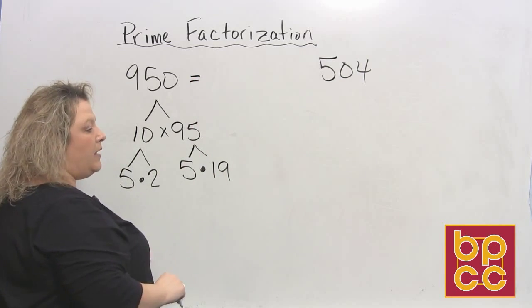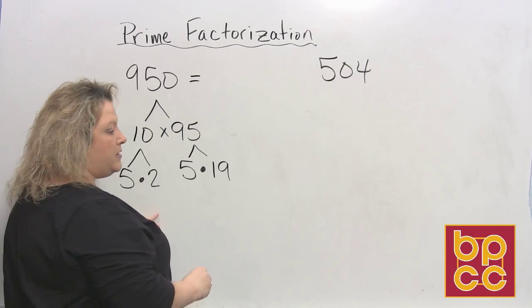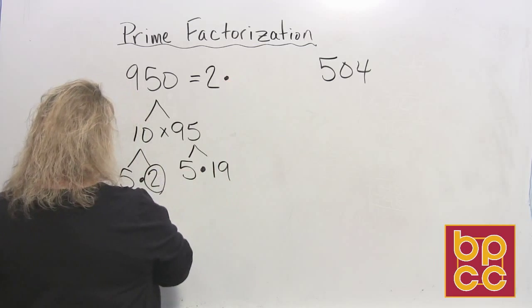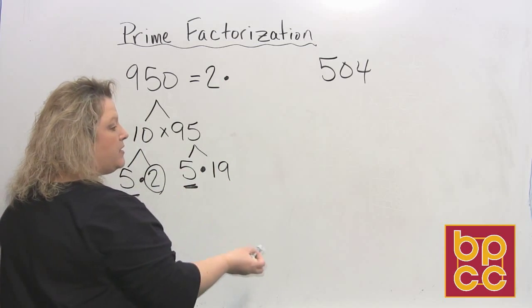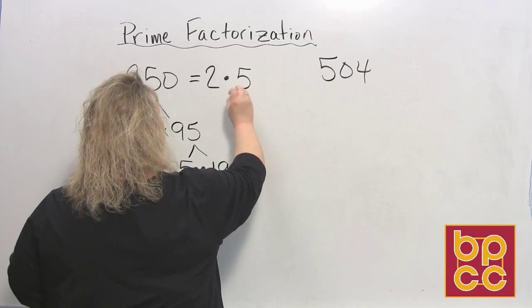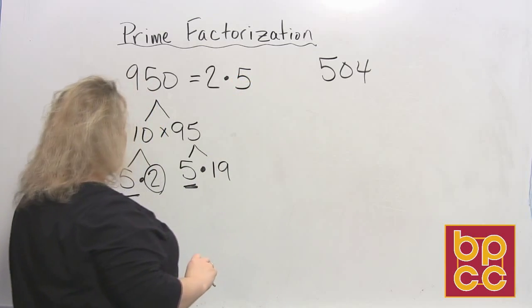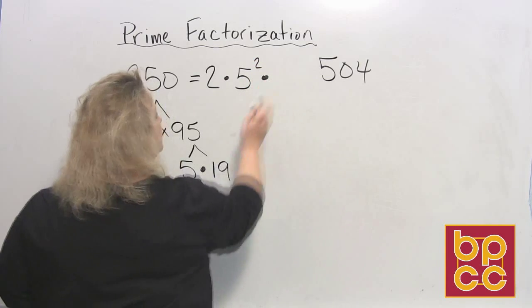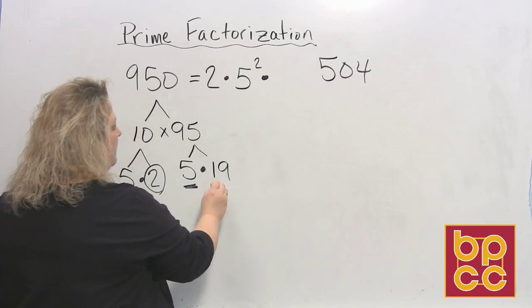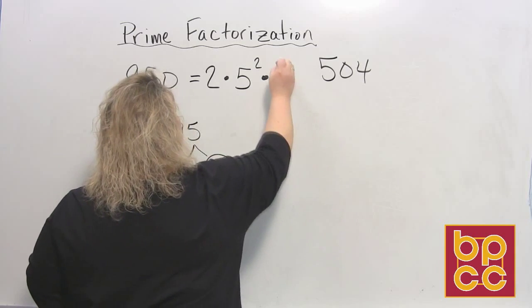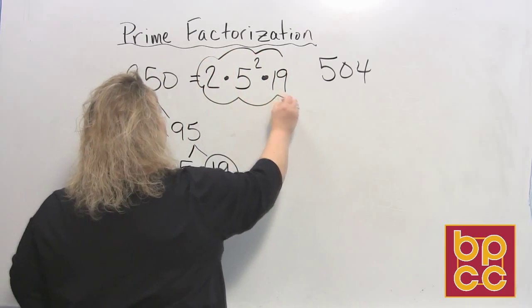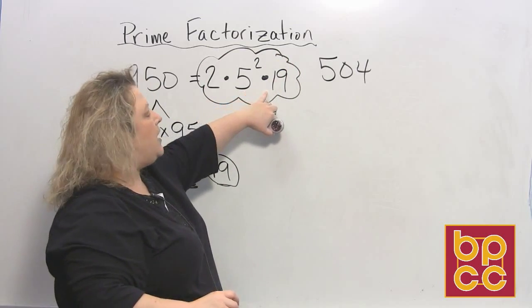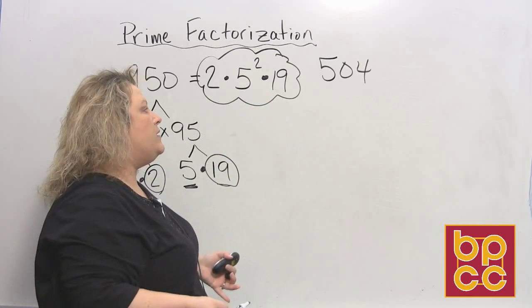Once you have all the prime numbers listed then you have completed your prime factorization. There is a way that you write this. You start with the smallest number which would be the two, times we have two fives and when you multiply a number to itself that would be squared to the second power, so we write that little two exponent and then the number 19. So the prime factorization for 950 would be two times five to the second power times 19.